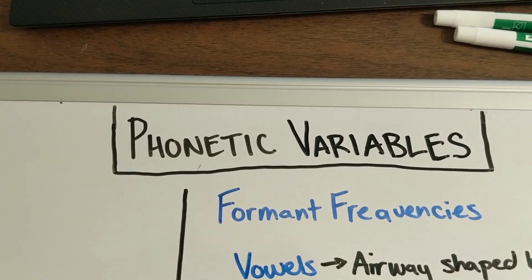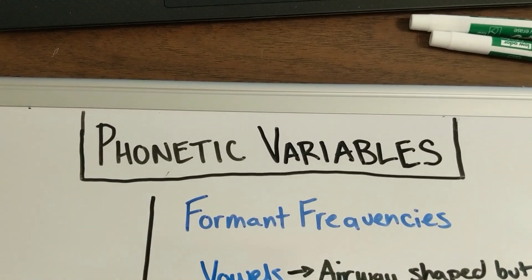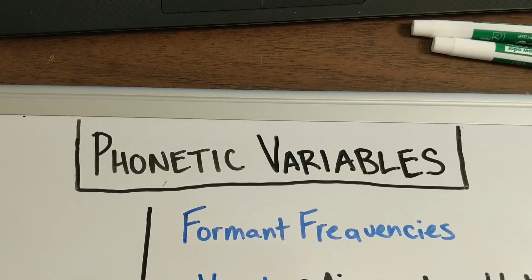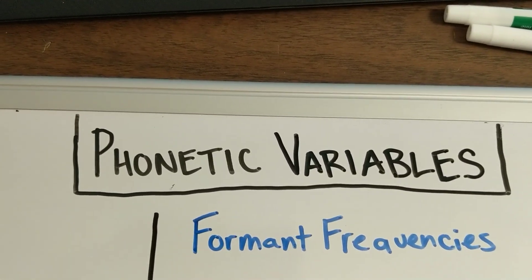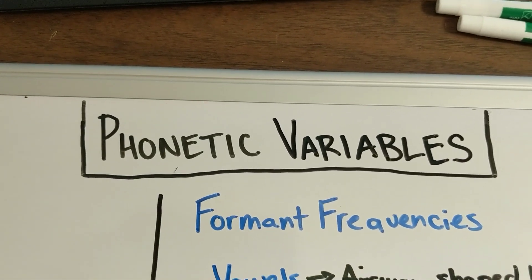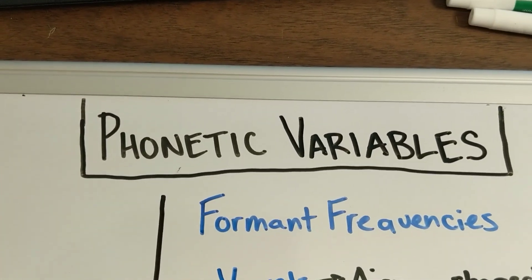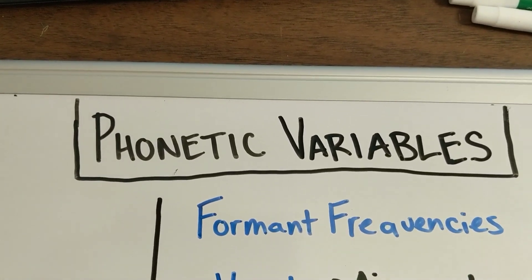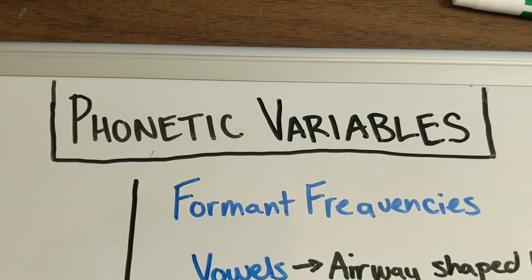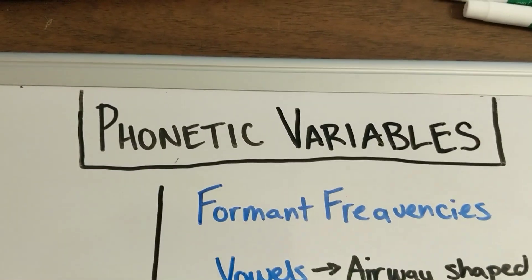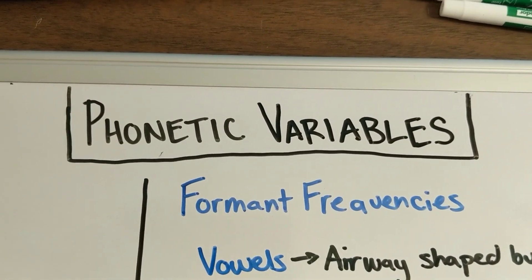Hello, and welcome to another lesson about language development. In this lesson, we are going to talk about some of the phonetic variables that children are listening to as they're trying to learn how to understand their first language. By phonetic variables, I mean features of the sound that a child can hear and we can analyze to figure out whether what you're hearing is a B or a D, or whether what you're hearing is an A or an AH — things like that.